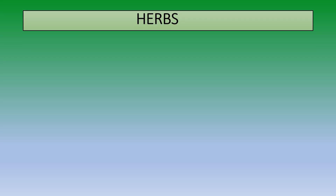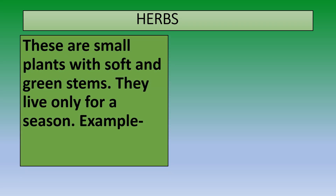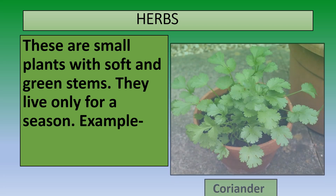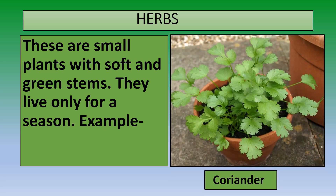Now let's learn about the other type of small plants known as herbs. What are herbs? These are small plants with soft and green stems. They live only for a season, which means they are seasonal plants. For example, coriander — if you look at this picture carefully, you will see that the coriander plant is small with soft and green stems.